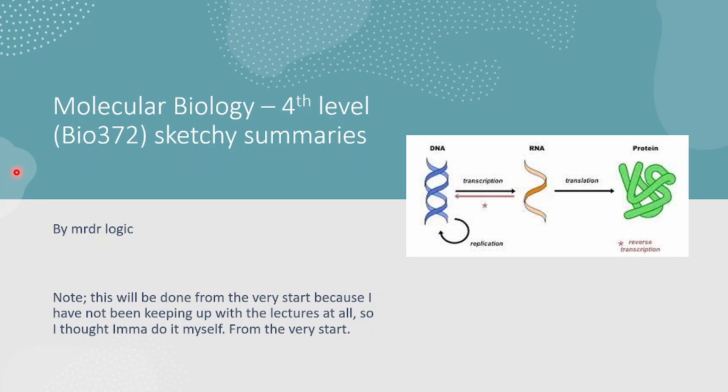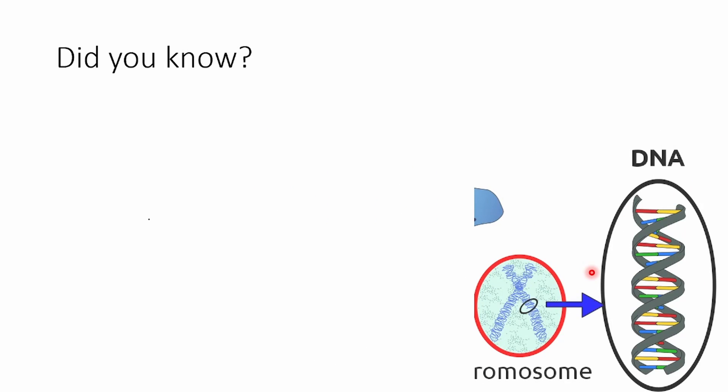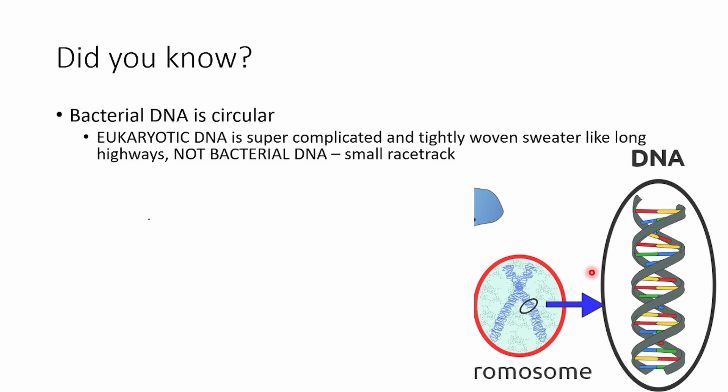So yeah, this is Bio 372 sketchy summaries — molecular biology at the fourth level. I'm going to make this as public as possible. Now, bacterial DNA is circular — that has nothing to do with eukaryotic DNA, because eukaryotic DNA is like a super complicated woven sweater. In the next video, you're going to see us wrapping strings around marbles. Then we rearrange it again — Lego, Lego, Lego — and then we have a pyramid built out of Legos. This is basically what eukaryotic DNA is.